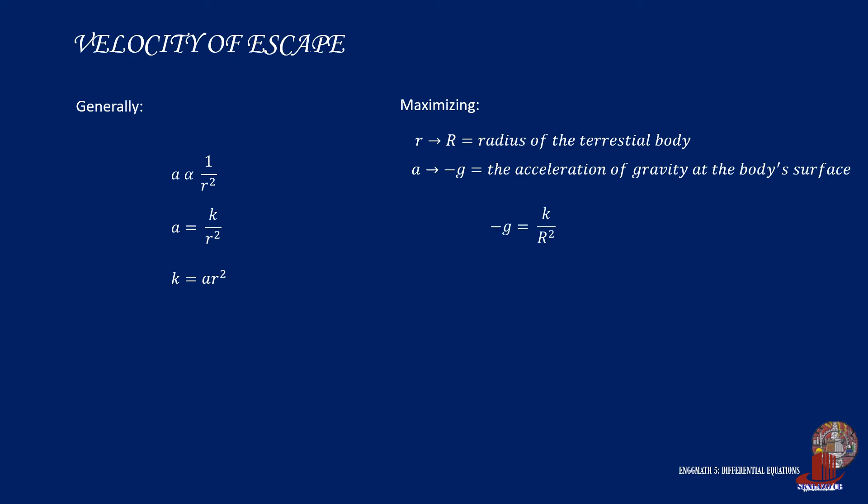Plugging these new parameters in Newtonian gravitational law, we get negative g is equal to k all over capital R squared. Where k is also extracted as negative g times capital R squared.